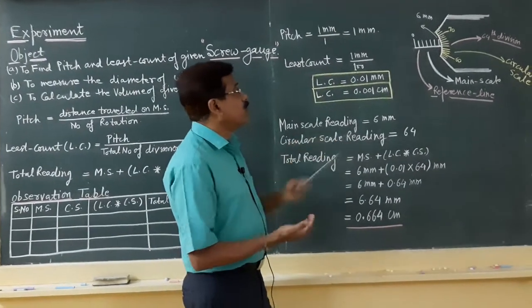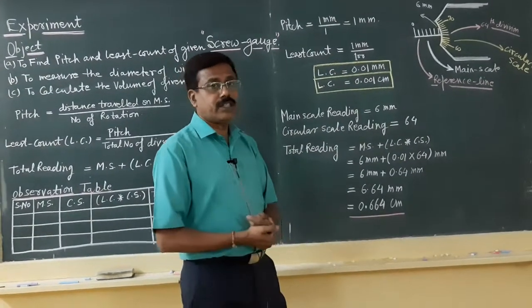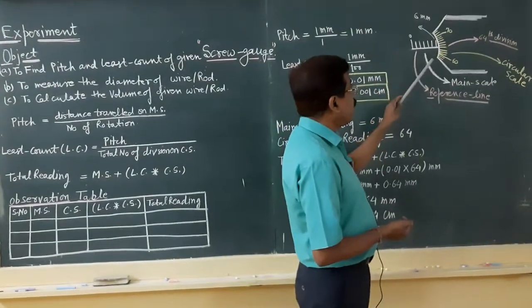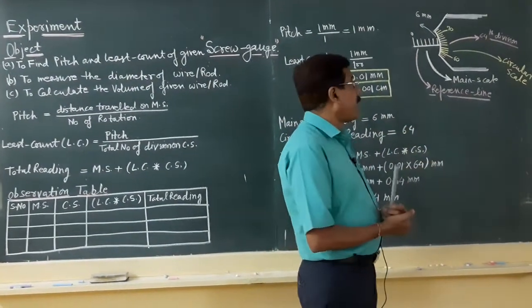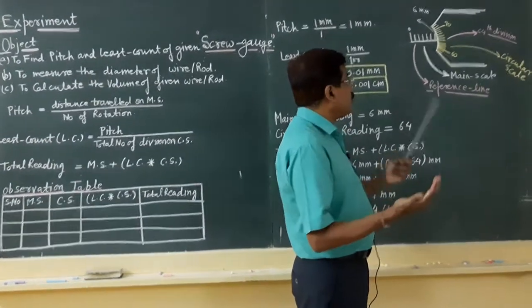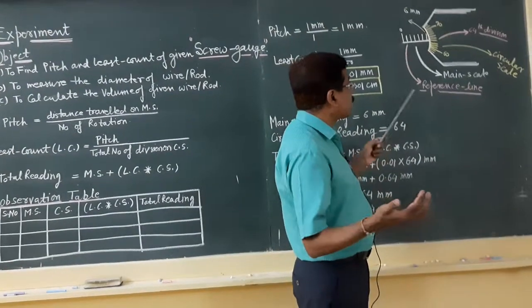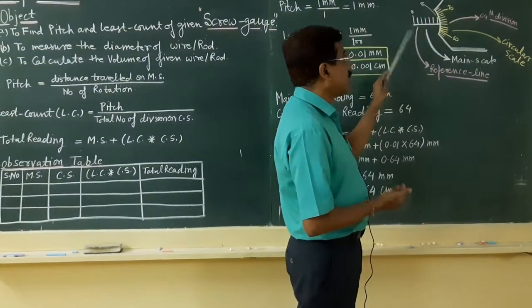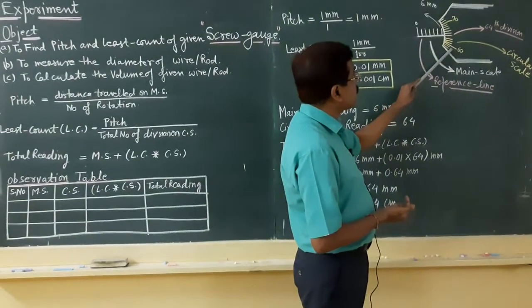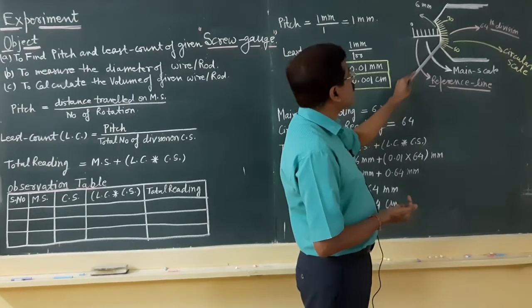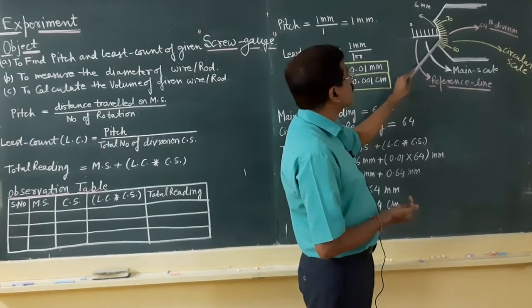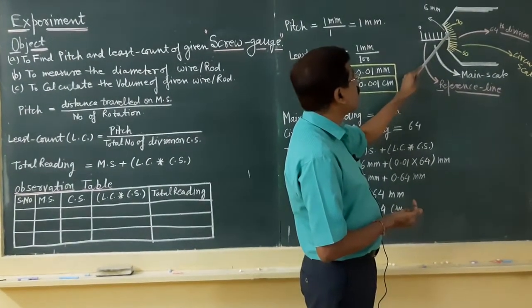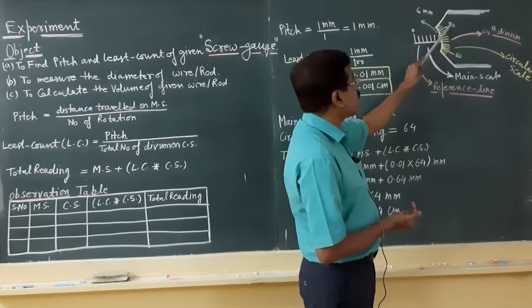Now we check how much more than 6 mm the reading is. We look at the circular scale and observe which division is exactly coinciding with the reference line of the main scale. In this diagram, counting from 60: 61, 62, 63, 64, 65, 67 — up to 70. Very clearly, the 64th division is coinciding with the reference line, so the circular scale reading is 64.